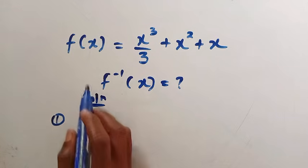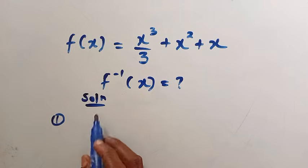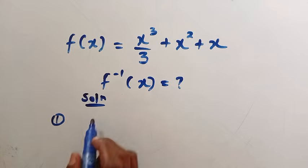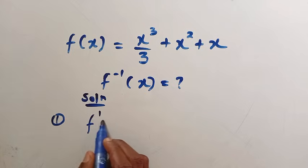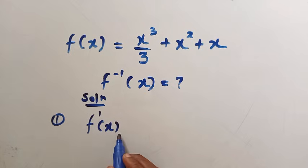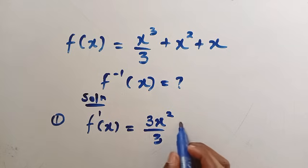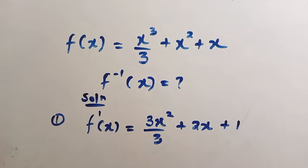let's consider finding the derivative of this function. For the derivative of this function, we have f prime of x equals, differentiating this, we have 3x squared divided by 3 plus 2x, then plus 1.